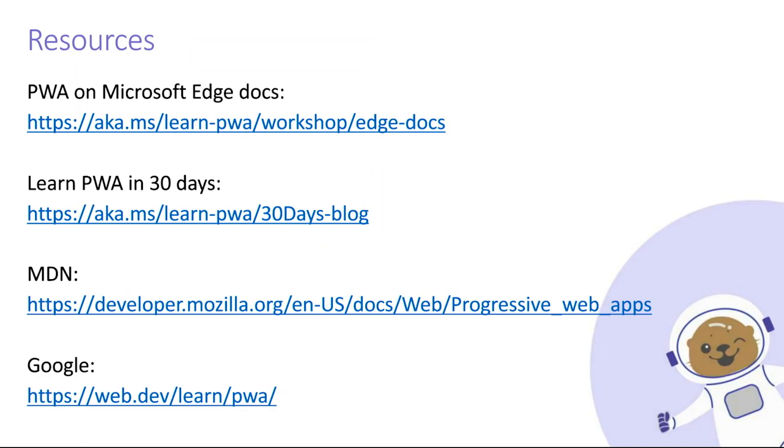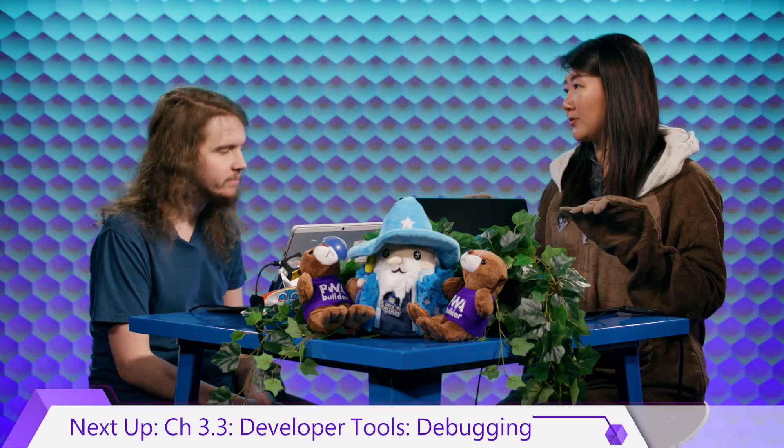Thank you so much. Those are the two toolings we introduced: the PWA Starter Template and the Visual Studio Code Extension — different ways to get started, and they all fit together too. On screen are some resources you can explore on your own to learn more about PWAs. In the next video, we'll be covering how to debug your Progressive Web App using Edge DevTools. We'll be right back.